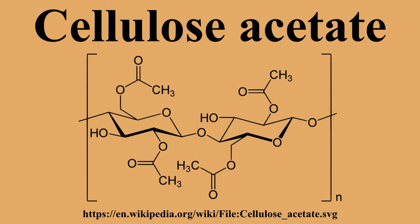In 1865, Paul Schützenberger discovered that cellulose reacts with acetic anhydride to form cellulose acetate. The German chemist Arthur Eichengrün and Theodor Becker invented the first soluble forms of cellulose acetate in 1903.